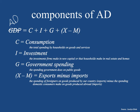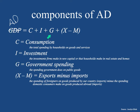Consumption is the total spending by households on goods and services — that spending makes up part of the overall aggregate demand, the total spending in a country. Investment is when firms make new capital. Our school just built a beautiful new fine arts center — that was an investment, they borrowed money to do it. Households also invest: if you buy a house, you usually borrow money from a bank, and that makes up the I component of GDP or aggregate demand.